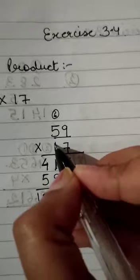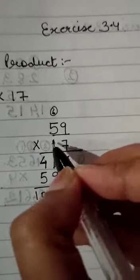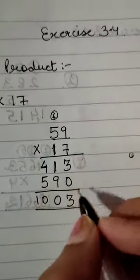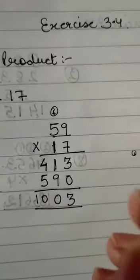Now we have to multiply it with the 1 also. 59 needs to be multiplied with 1. It is at the tens place, so we will write 0 at the ones place.